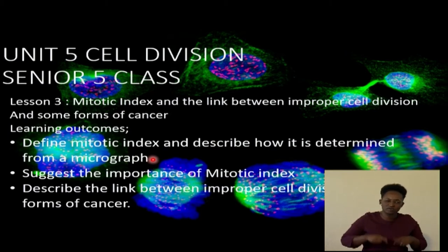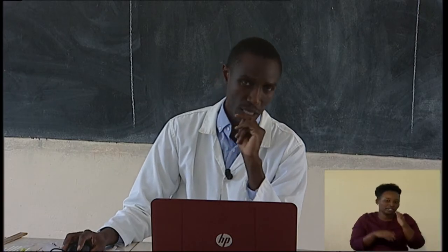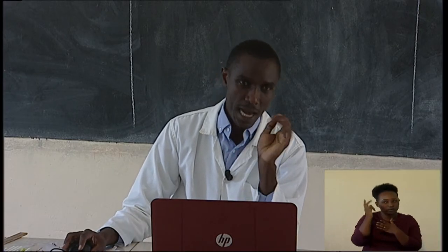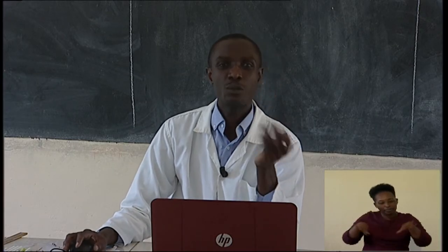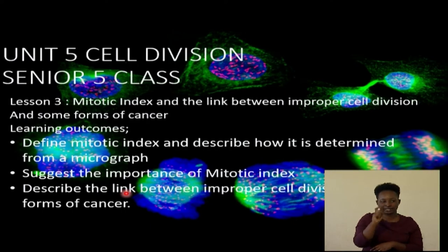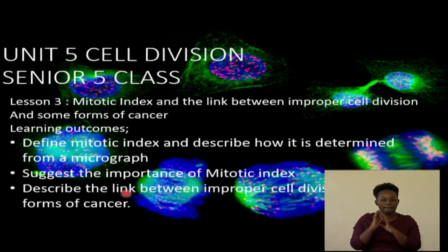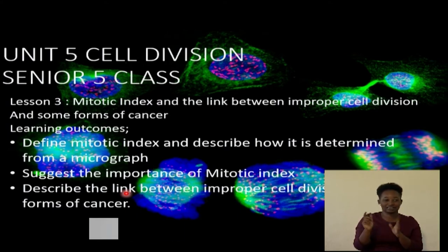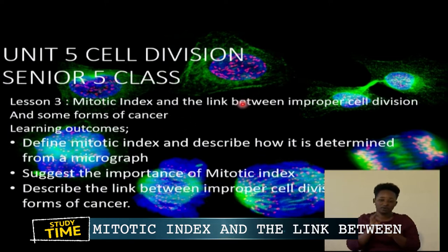What do the figures tell us? This takes us to the importance of mitotic index. And finally, we should be able to describe the connection between when cells wrongly divide and some forms of cancer — the second part of our lesson topic.